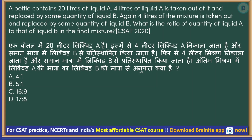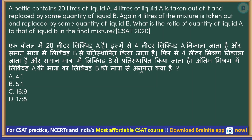So let us start with the first question. A bottle contains 20 liters of liquid A. 4 liters of liquid A is taken out of it and replaced by the same quantity of liquid B. Again, 4 liters of mixture is taken out and replaced by the same quantity of liquid B. What is the ratio of quantity of liquid A to that of liquid B in the final mixture?